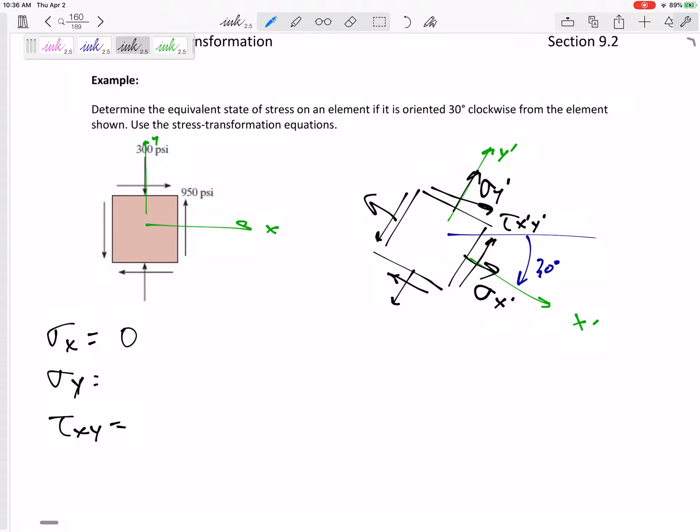Sigma y is, do you see this, negative 300. Now, I shouldn't include my units. Everything's going to be in PSI. Negative 300 PSI. And tau xy, and you see why that's negative? Because that is pushing in in the y direction. Negative 300. And then tau xy positive 950. Positive because it's pointing in towards that top right corner.